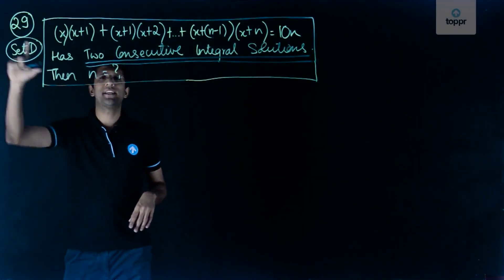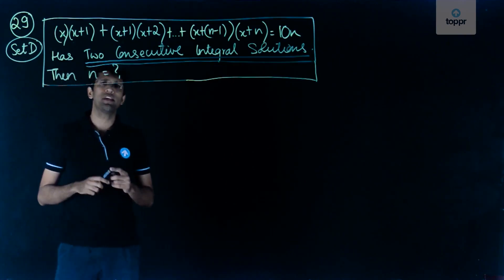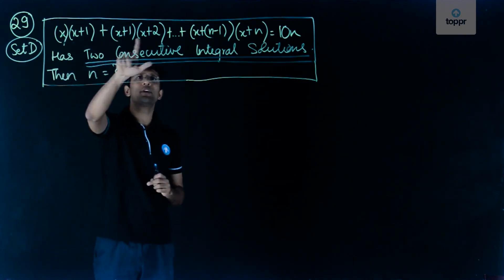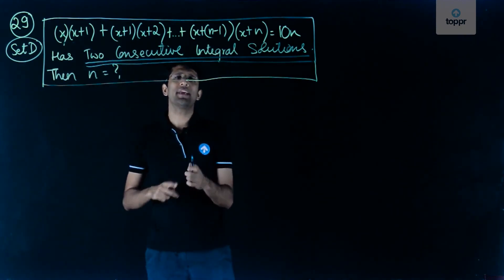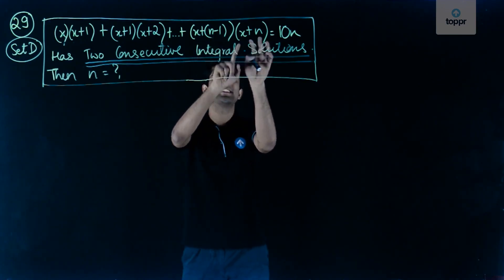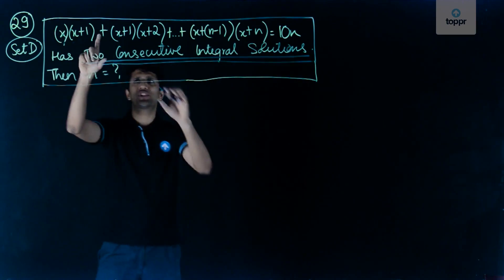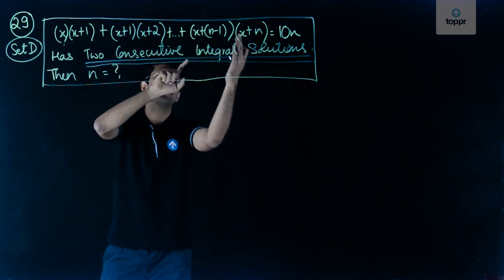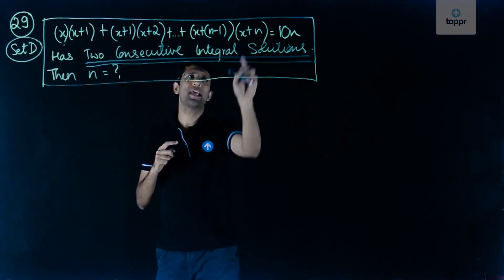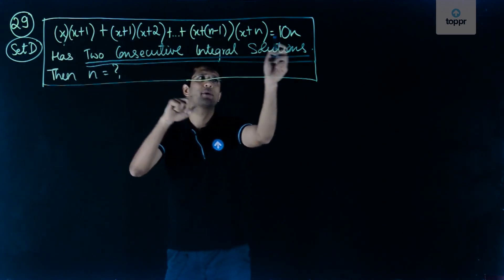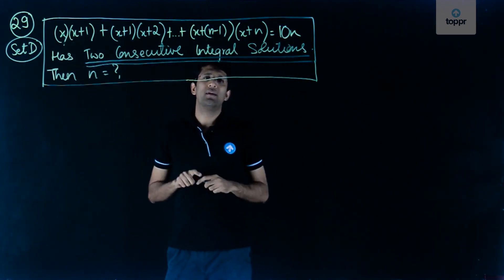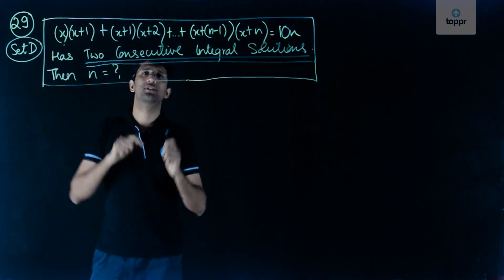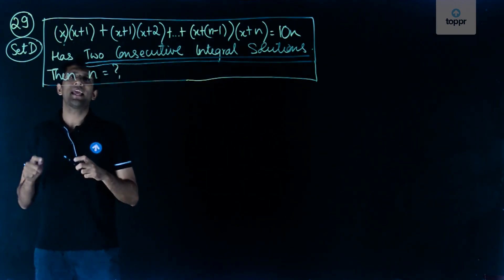We will now look at question number 29 of Set D of the IIT JEE 2017 Main paper. The question reads: x(x+1) + (x+1)(x+2) + ... + (x+n-1)(x+n) = 10n. We have been given that this quadratic in x has two consecutive integral solutions, and we have to find the value of n, where n is a positive integer.